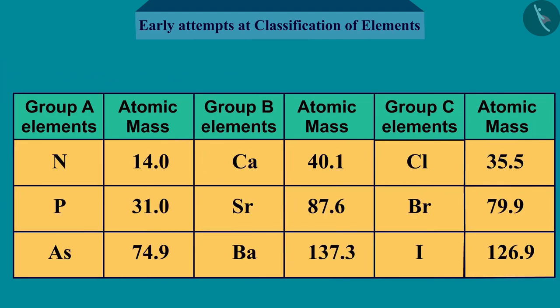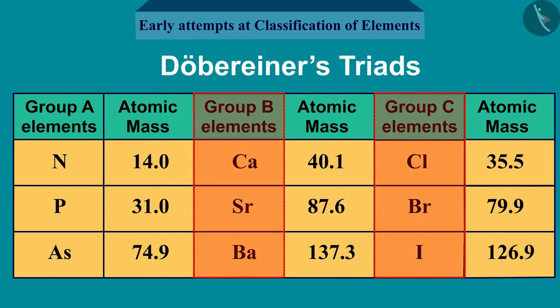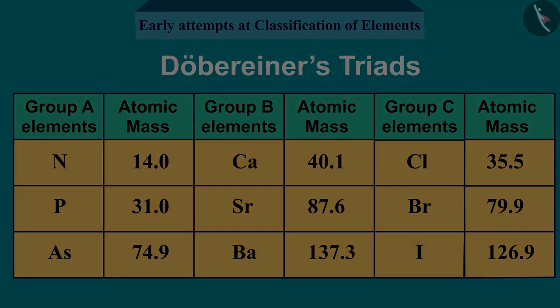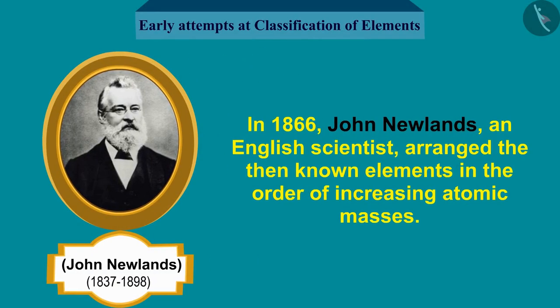You will find that groups B and C form Döbereiner triads. Now let's discuss why it was not accepted widely. Döbereiner could identify only three triads from the elements known at that time, hence this system of classification into triads was not found to be useful.